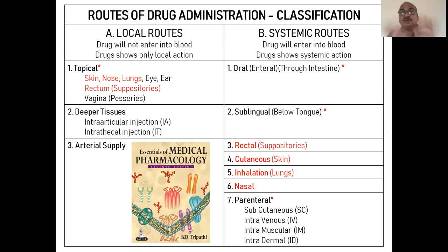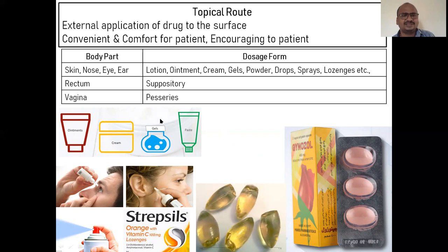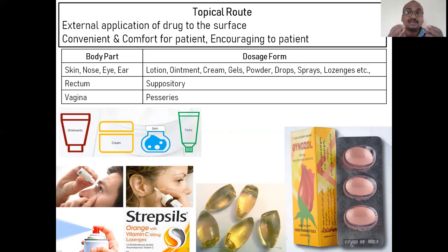Topical route — the star marks are all important: skin, nose, and lung. This is external application of a drug to the surface only. It is convenient, comfortable, and encouraging for the patient. You can apply it to skin, nose, eye, and ear using lotions, liniments, creams, ointments, and gels. Lozenges such as Strepsils show local action in the throat — even though you are sucking a tablet, the action is local. Suppositories are bullet-shaped for rectal use, and vaginal inserts are meant for insertion into the vagina.